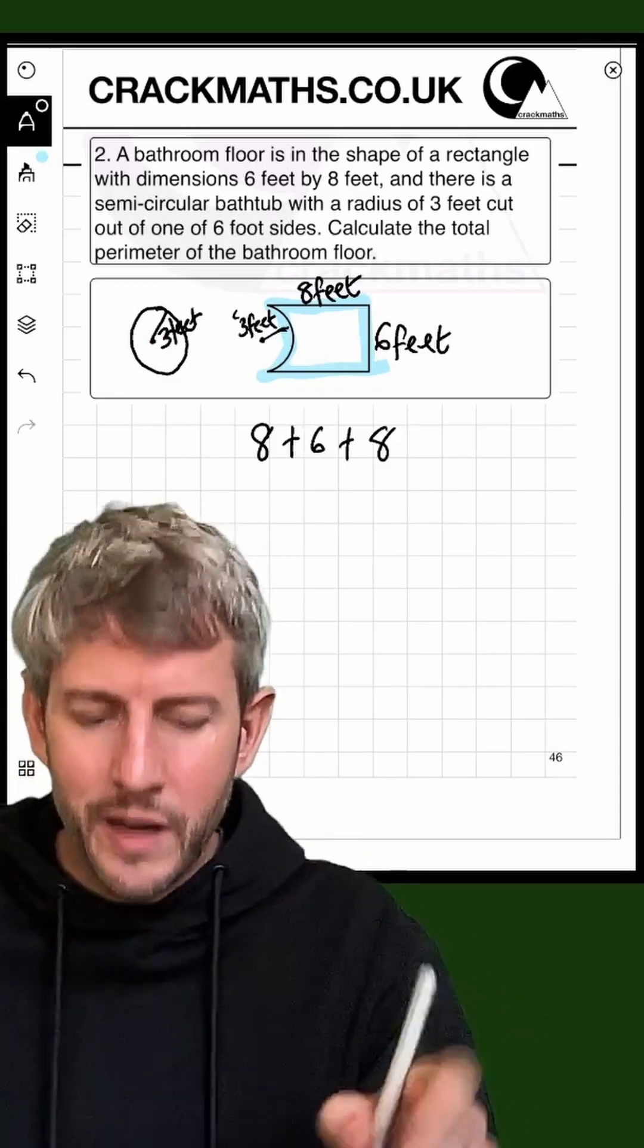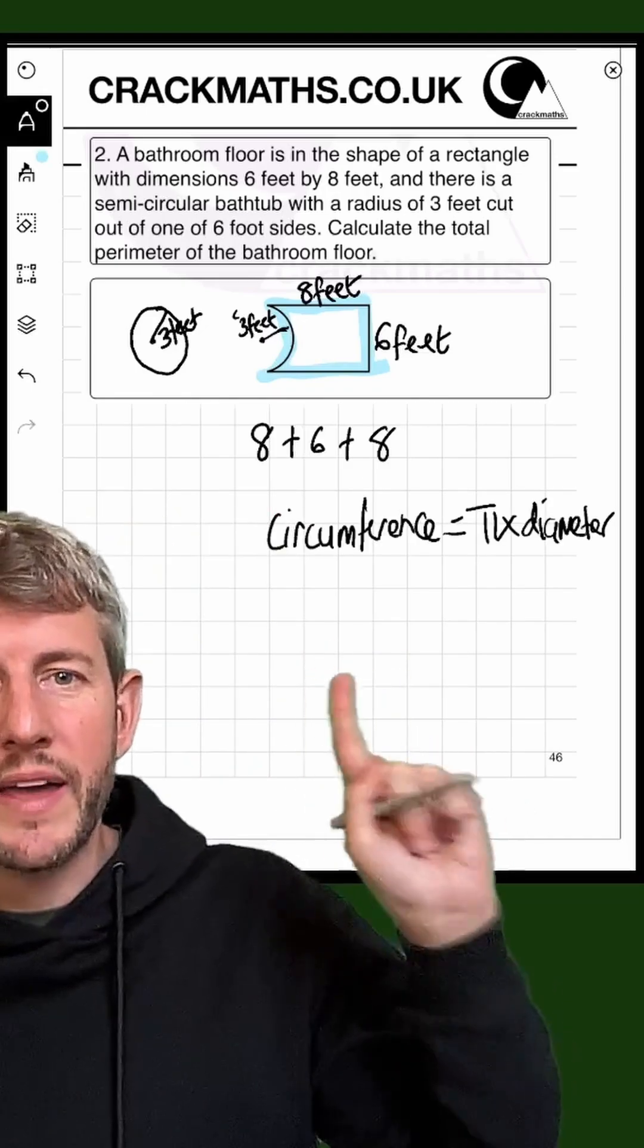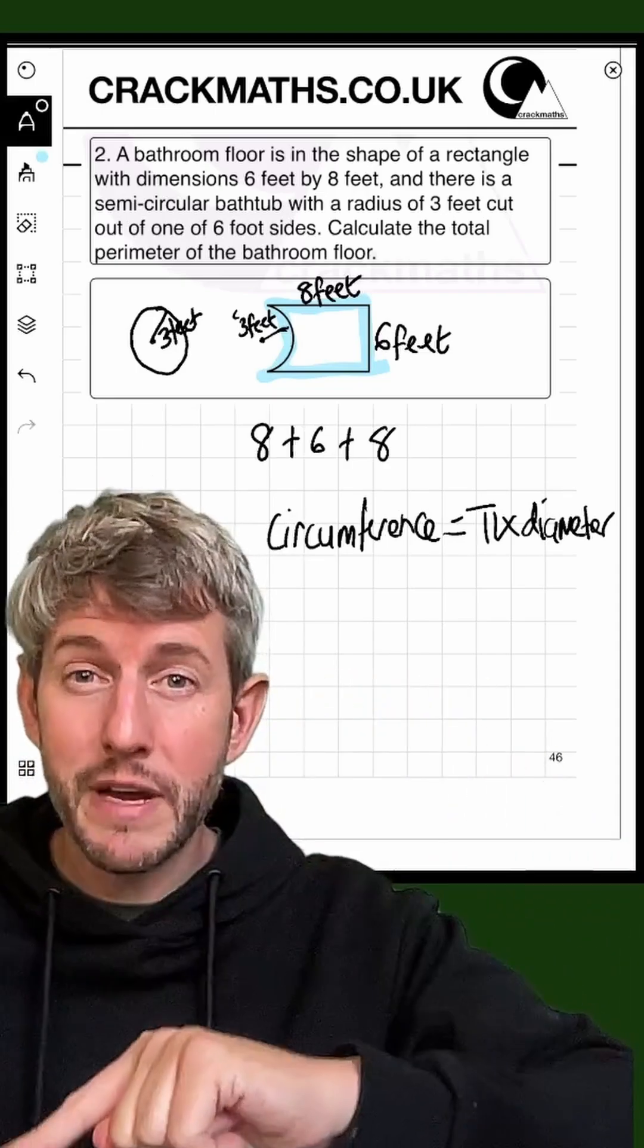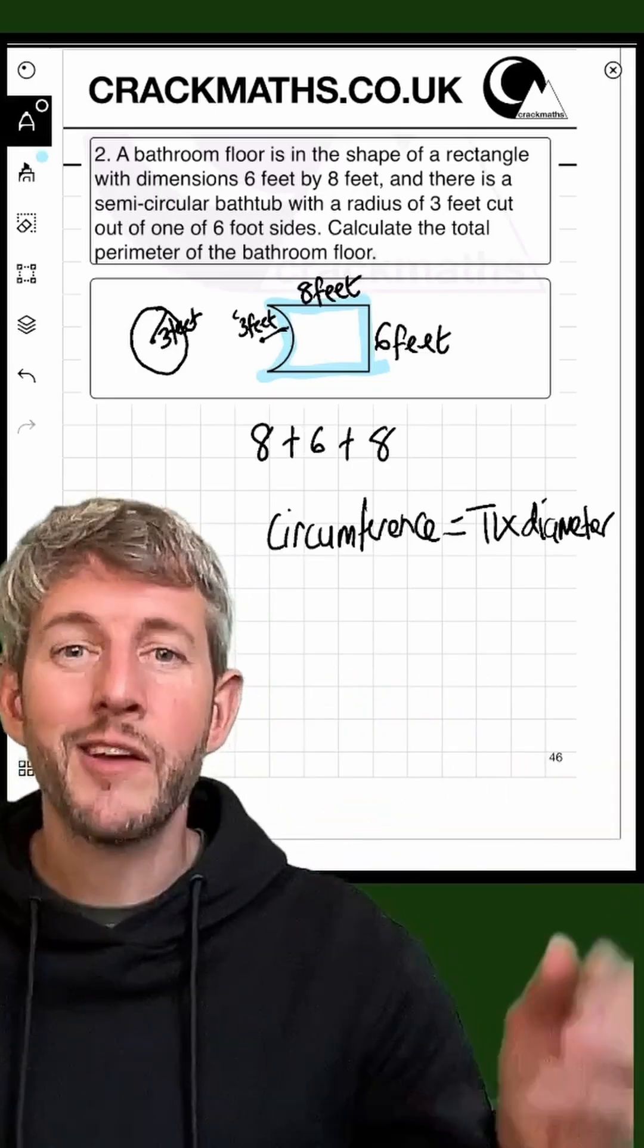Okay, so we know that the formula for circumference is circumference equals pi times diameter. So we've been given the radius here, which is 3 feet, which means that the diameter is twice that, so that will be 6 feet.